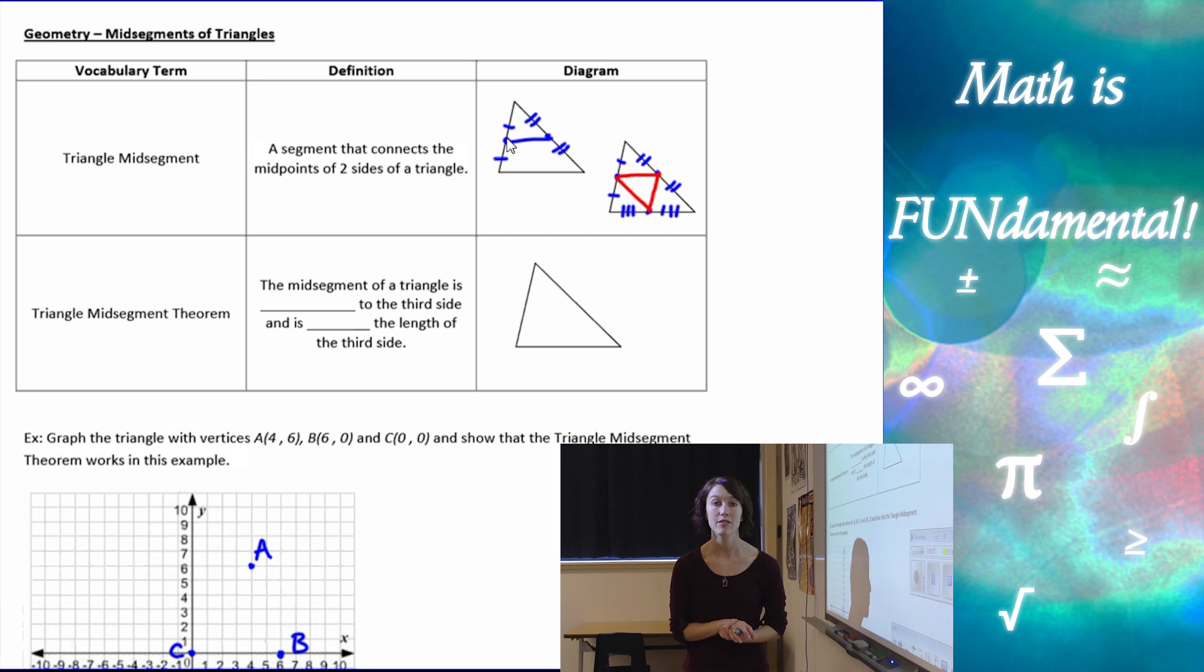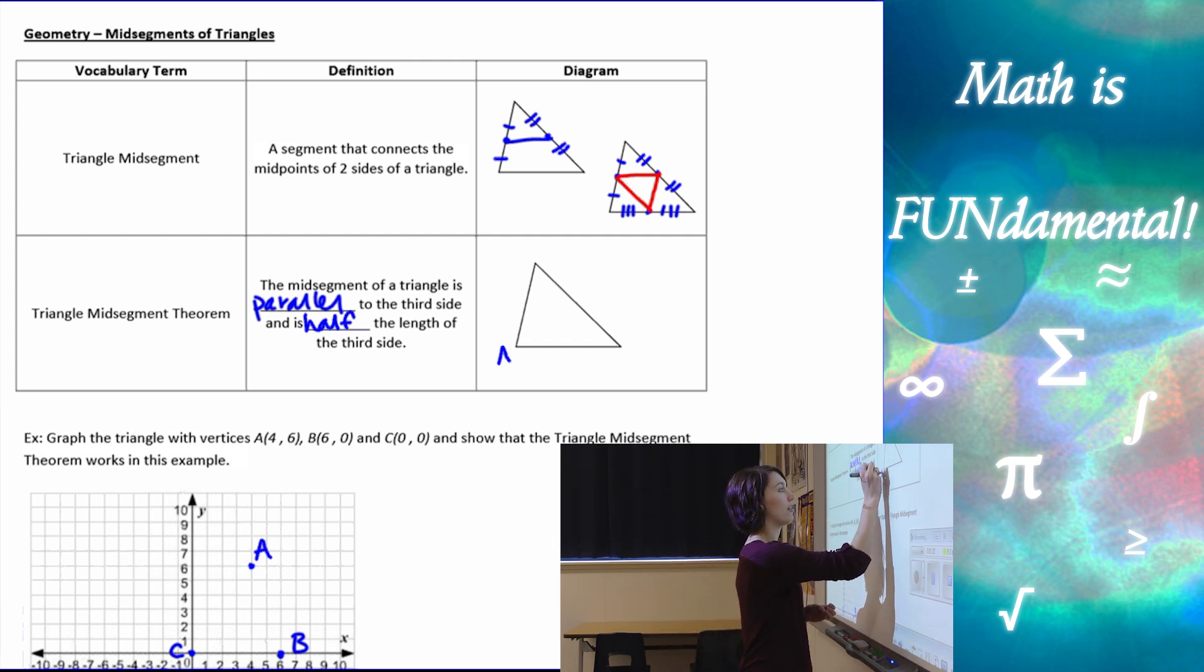Now the triangle mid-segment theorem states that the mid-segment of a triangle is always parallel to the third side, and is half the length of that third side. So let's look at what that would look like in a diagram.